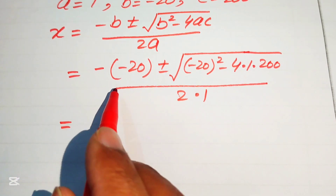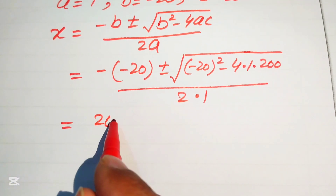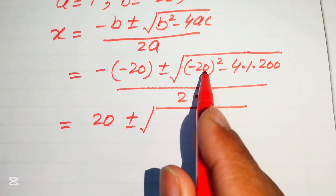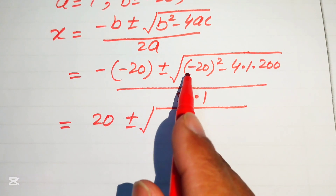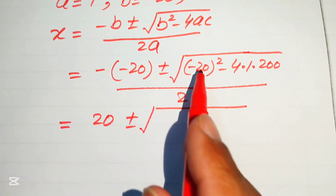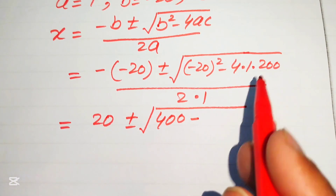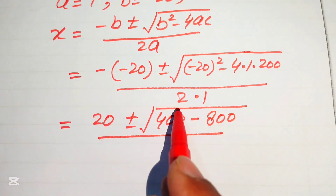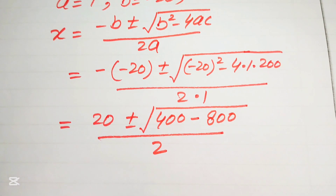We need more simplification. Negative times negative becomes positive 20, plus or minus the square root. The square of minus 20 becomes positive 400, minus 4 times 200 equals 800, all divided by 2 times 1, which equals 2.